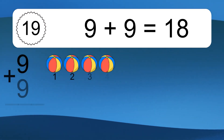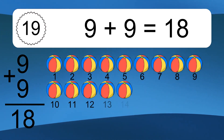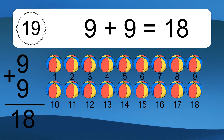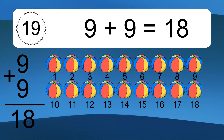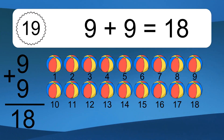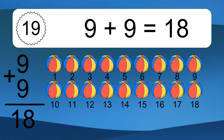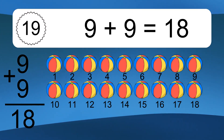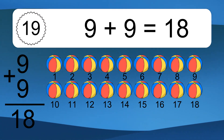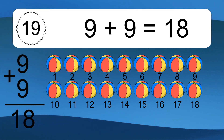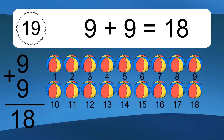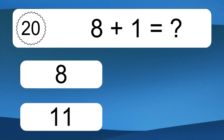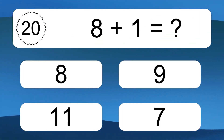9 plus 9 equals 18. Let's count it: 1, 2, 3, 4, 5, 6, 7, 8, 9, 10, 11, 12, 13, 14, 15, 16, 17, 18. 8 plus 1 equals what?